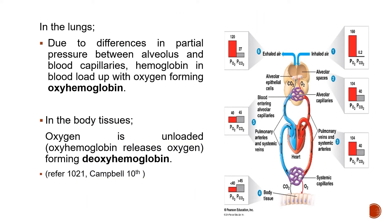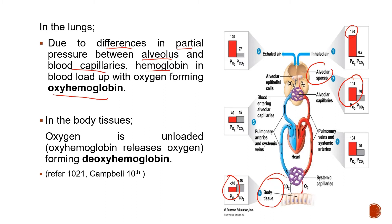Due to differences in partial pressure between the alveolus and the blood capillaries, hemoglobin in the blood loads up with oxygen, forming oxyhemoglobin. The partial pressure drops from 160 mmHg down to 104 mmHg, filling the hemoglobin with oxygen. In the body tissues, where partial pressure of oxygen is lower, oxygen is unloaded into the body tissues and oxyhemoglobin releases oxygen.